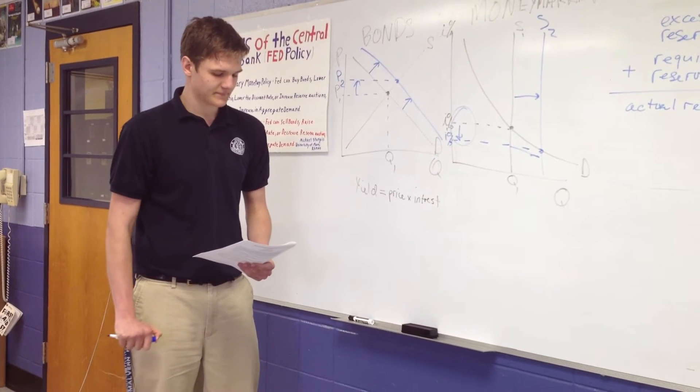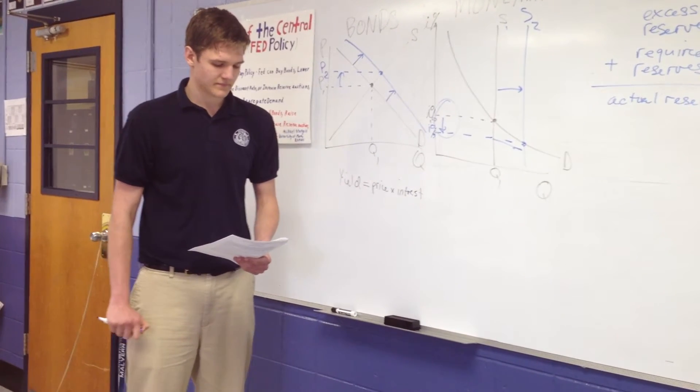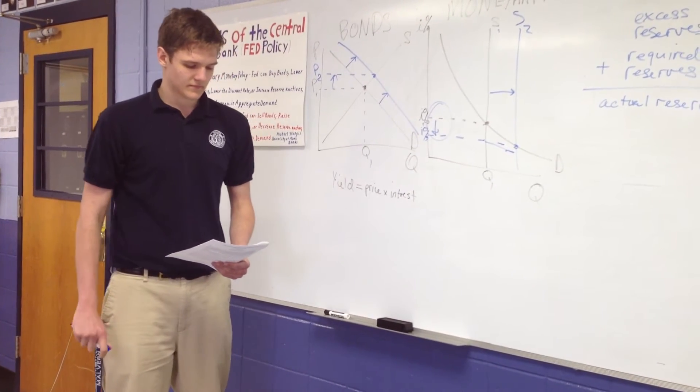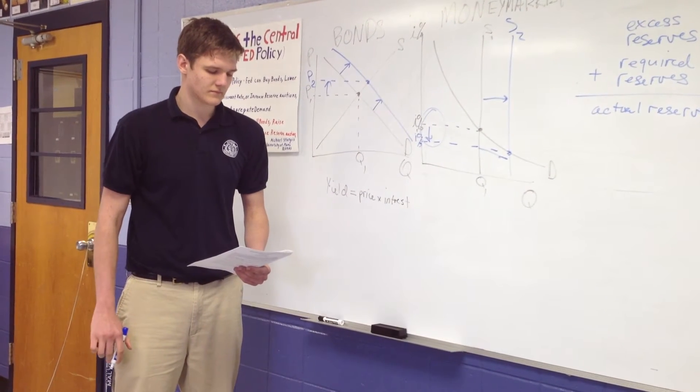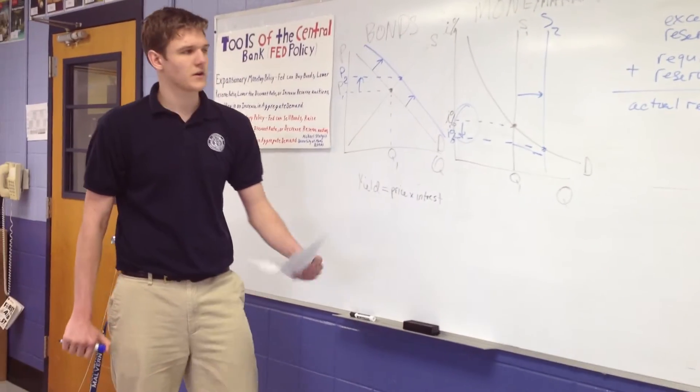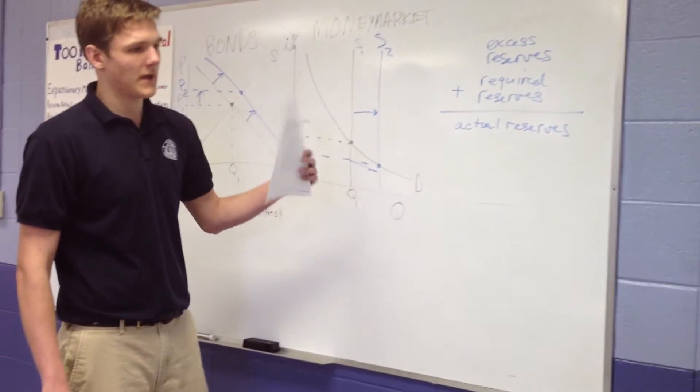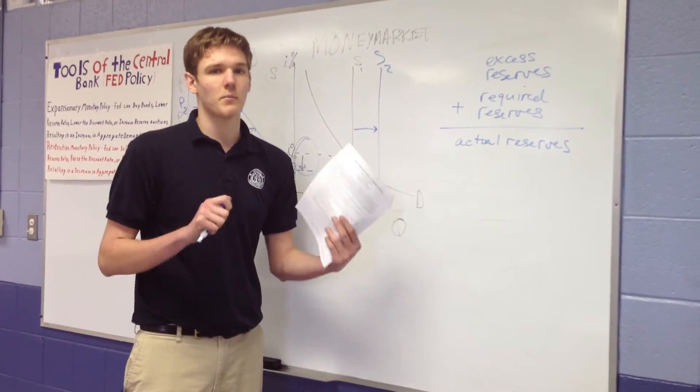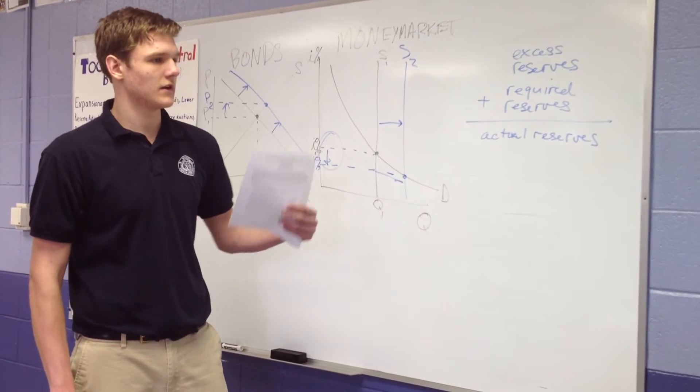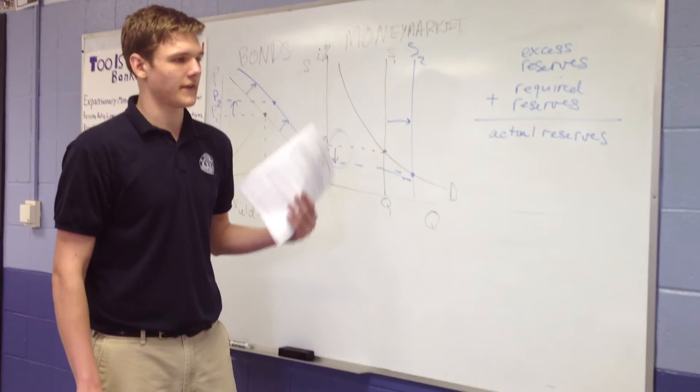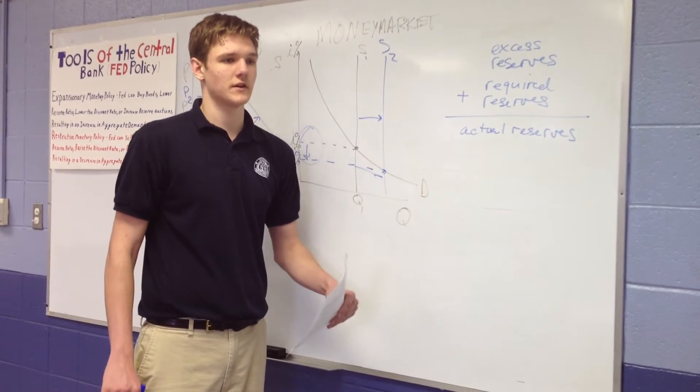Letter C. Assume that the Federal Reserve buys government bonds from commercial banks. Based only on this transaction, will the level of required reserves in the commercial banks increase, decrease, or remain the same? Okay, so since the banks have to keep a required percentage, a constant percentage of their reserves in a vault, and they can't loan that out, because that's a constant percentage, we can figure out the change in the level of the reserves.